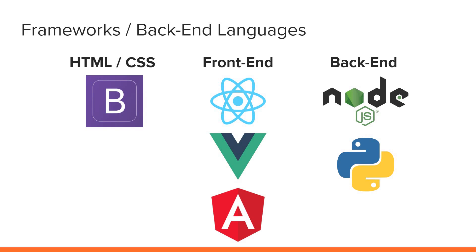Moving on to back-end technologies: Node.js is not a framework, but it is based on JavaScript. So if you already know JavaScript, Node has tons of packages that can expand your capabilities — you can install something like Express and create a web server. If you're looking into back-end development and you already know JavaScript, Node.js would be the way to go. The other very popular back-end language that I think is taking over is Python. And when it comes to machine learning and AI, Python is king.